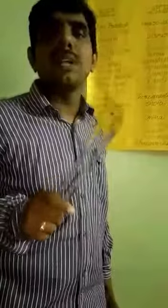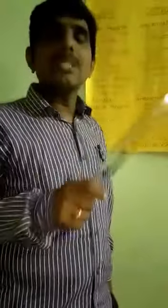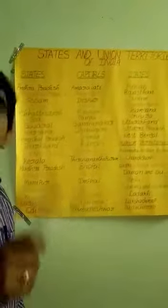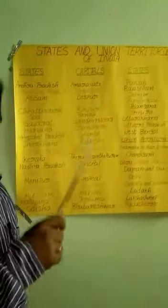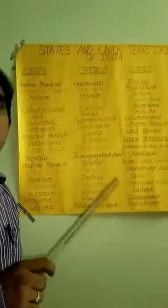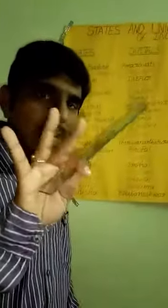In our country, we have unity in diversity. These are the topics we covered today. The homework is very simple — out of these 28 states and the 9 union territories, practice minimum 10 states and capitals. That is the homework for all of you, children. Thank you. Bye-bye.